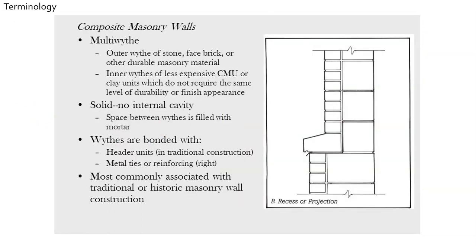There are a couple of different types of masonry walls — two main types, but numerous variations. A composite masonry wall is what we're looking at here: multi-wythe, where the outer wythe is stone, face brick, or other durable masonry material. The inside wythe would be CMU — concrete masonry units, sometimes called cinder blocks — larger pieces.